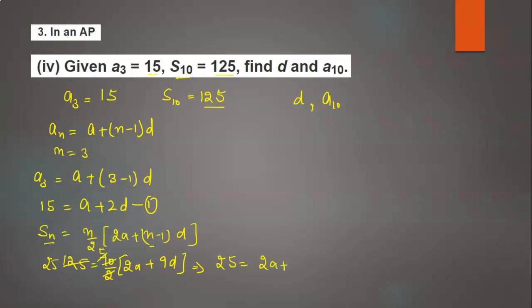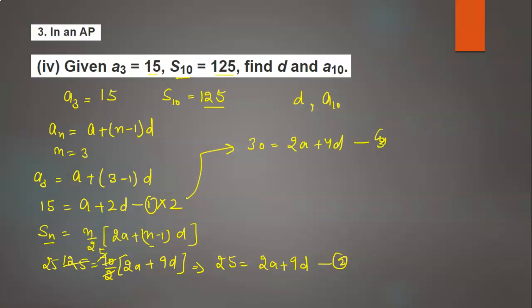Now multiply equation 1 by 2, so we get 30 equals 2a plus 4d. This is our third equation.